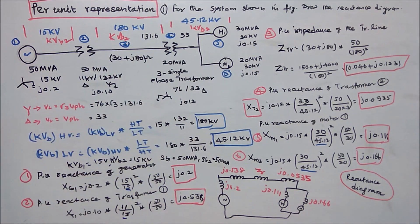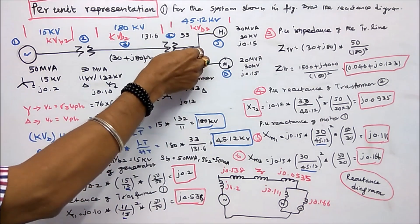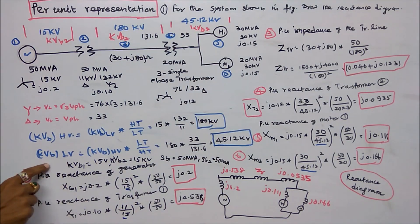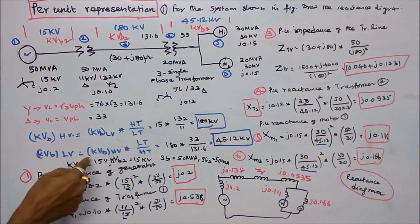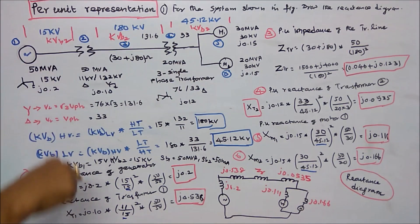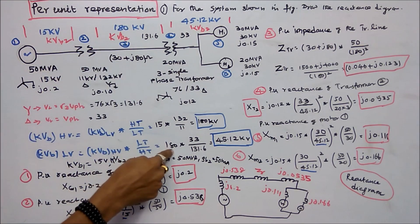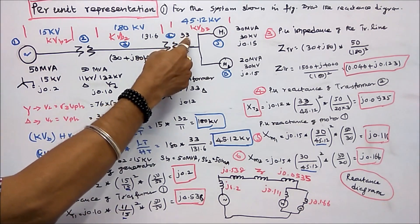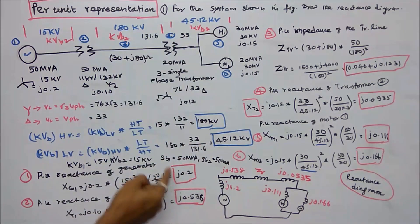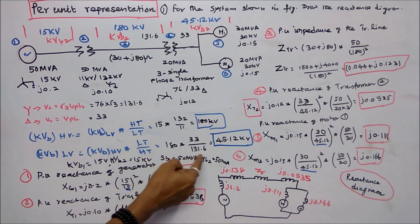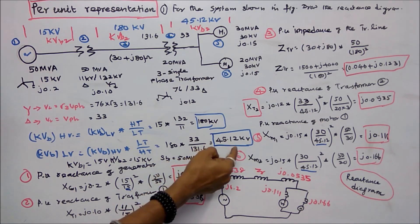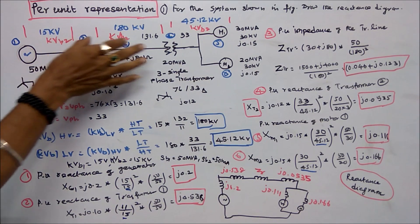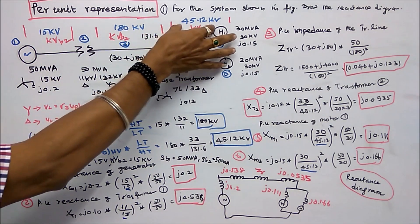Next, find the low voltage base on the motor side. Low voltage kV base equals high voltage base 180 into LT 33 divided by HT 131.6, giving 180 into 33/131.6, which equals 45.12 kV. So the base voltages are: 15 kV, 180 kV transmission side, and 45.12 kV on the motor side.